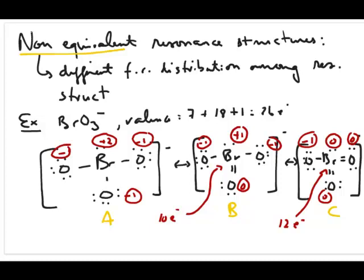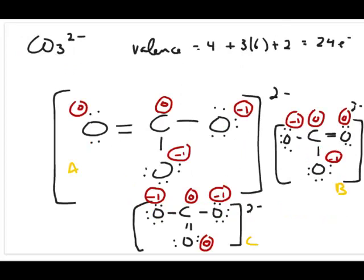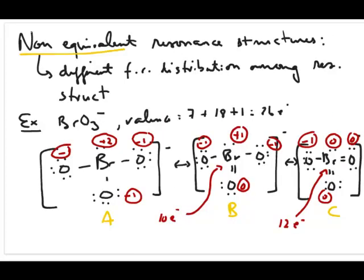All three structures are legitimate. For equivalent resonance structures, we simply take an average of the structures to get the experimental structure, as discussed in the first resonance video. But with non-equivalent resonance structures, each has different properties, so the question is: how do we account for these differences? Is the real structure just an average of all of them, or is there something else? In the next video, we'll discuss how to pick the best structure among these non-equivalent resonance structures.